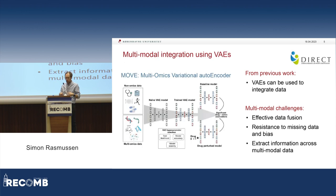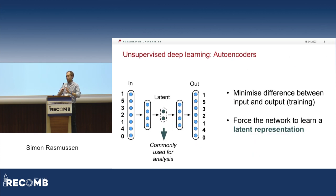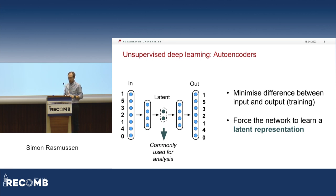To do this, we developed a framework called MOVE — Multiomics Variational Autoencoders. I just have one slide here. I think it's quite basic; probably most people here know what it's about, but I just wanted to take this slide to talk about it.